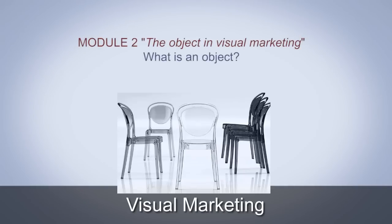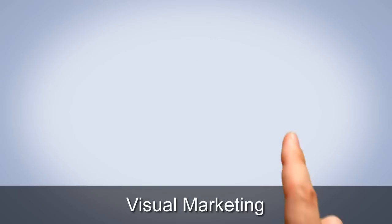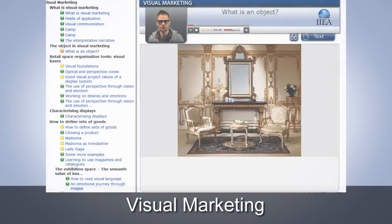The second module, what is an object, deals with all the components that belong to and define an object according to the market and the reference consumer, and which represent the nuances of research and design that delineate the field of action of visual marketing.